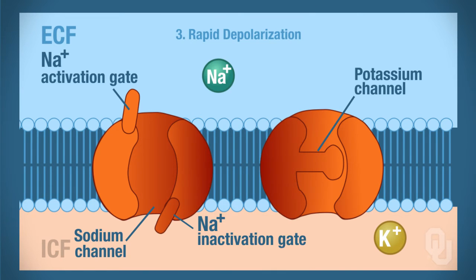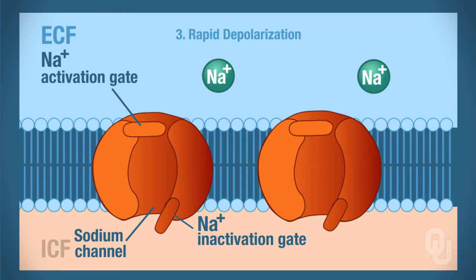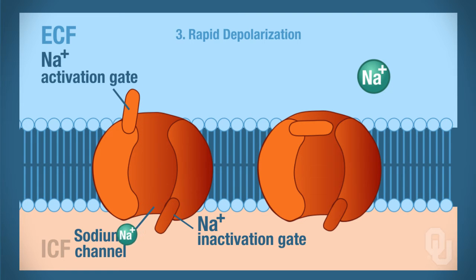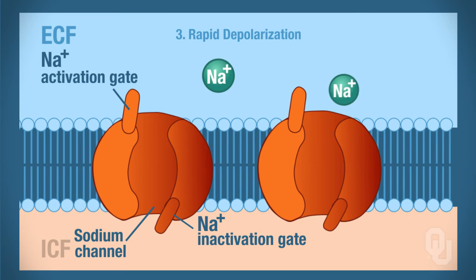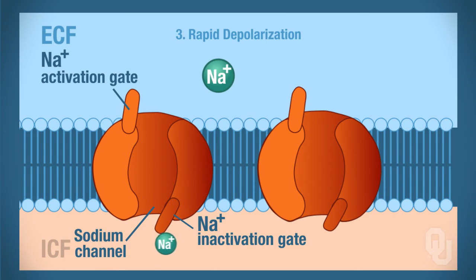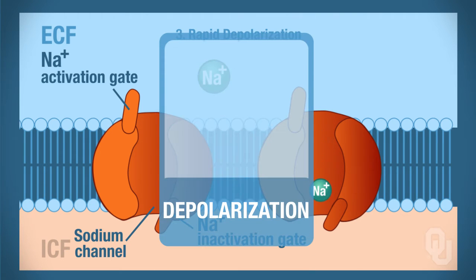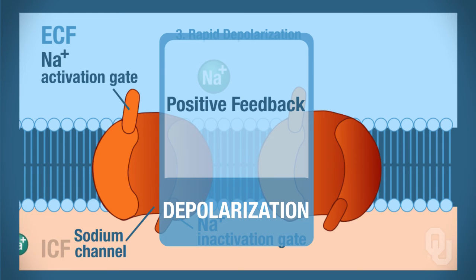Let's look at why this depolarization is called rapid depol. At the axon hillock, when the membrane potential reaches negative 55 millivolts, the activation gate opens and sodium moves into the cell carrying a positive charge. That changes the membrane potential at that location, which stimulates the next voltage-gated channel to open — more sodium enters, more positive charges arrive, and the next channel is stimulated to open. We've entered a type of feedback that enhances the change: positive feedback. Positive feedback is the reason the slope of rapid depolarization is so steep.